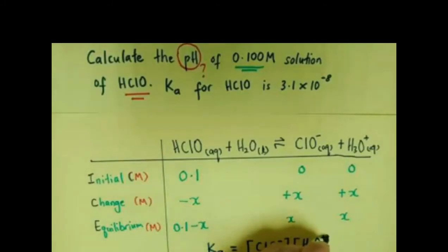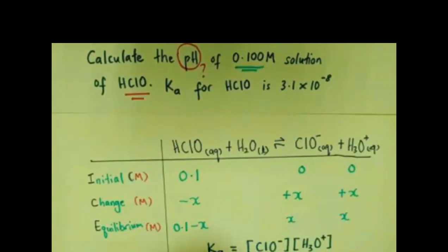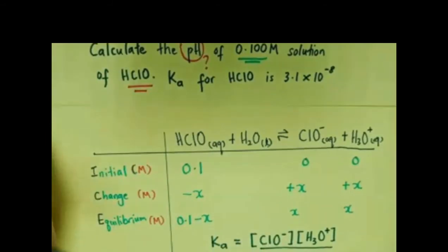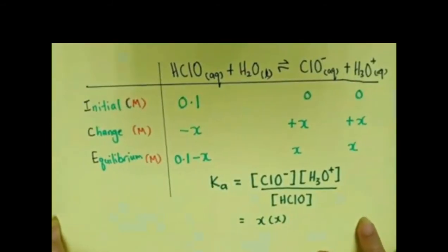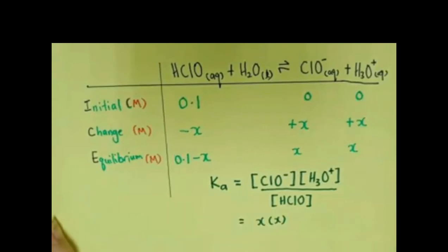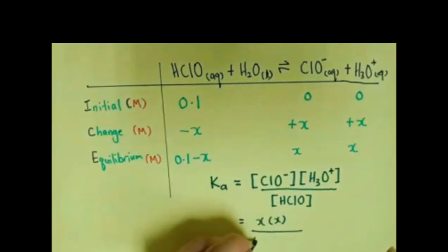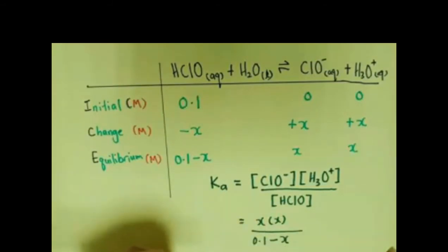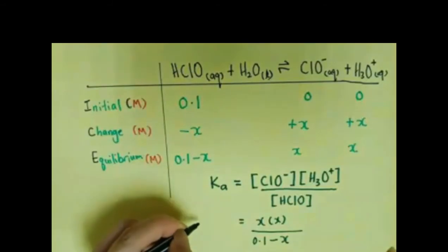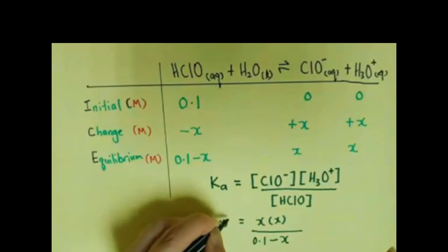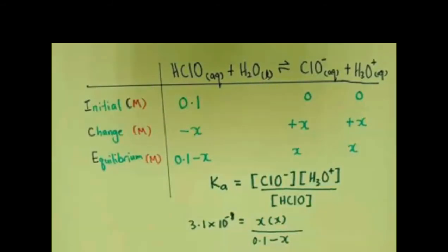Next, we write the Ka expression. Ka equals the concentration of the products over the concentration of the reactant, which is x times x over (0.1 minus x). The Ka value given in the question is 3.1 times 10 to the power of negative 8.